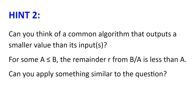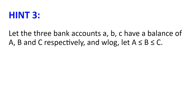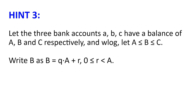So if we have bank accounts with A dollars and B dollars, can we obtain a bank account with R dollars? Hint number three: Let the three bank accounts A, B and C have a balance of A, B and C respectively, and without loss of generality, let A be less than or equal to B be less than or equal to C. Write B as B equal to Q times A plus R, with R between 0 and A. So R is just the remainder when B is divided by A.